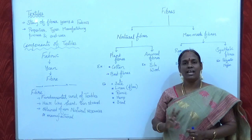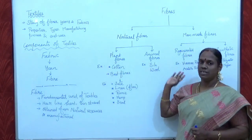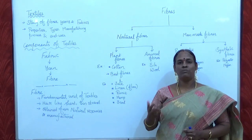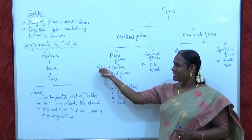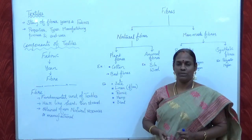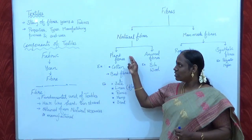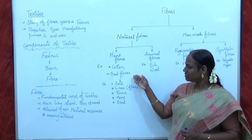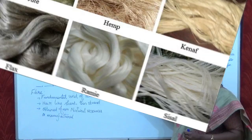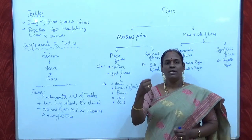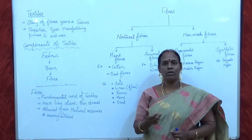Natural fibres are mainly classified into two categories: plant fibres and animal fibres. Plant fibres are obtained from various parts of plants. An example of plant fibres is cotton, which is a seed fibre and is called the king of fibres. Bast fibres are also a part of plant fibres. Examples of bast fibres are jute, linen, ramie, hemp, and sisal. Bast fibres are obtained from the stem of the plant.